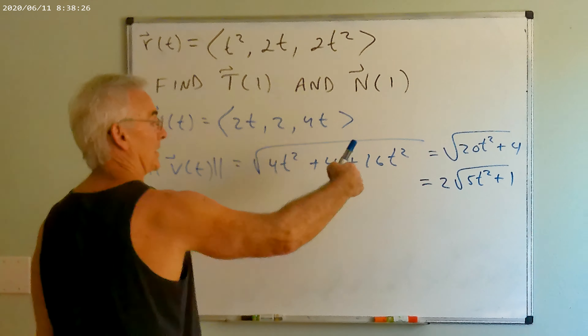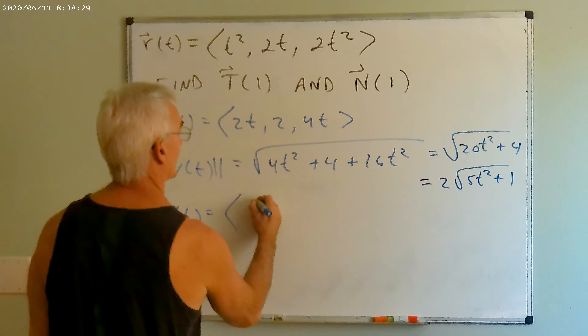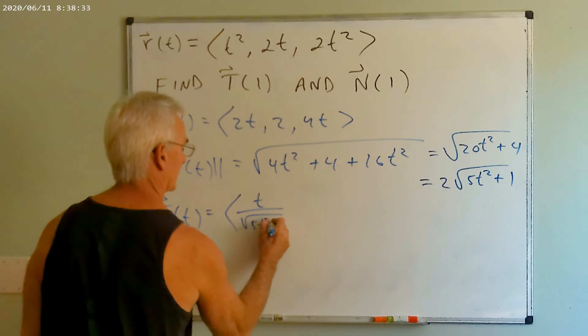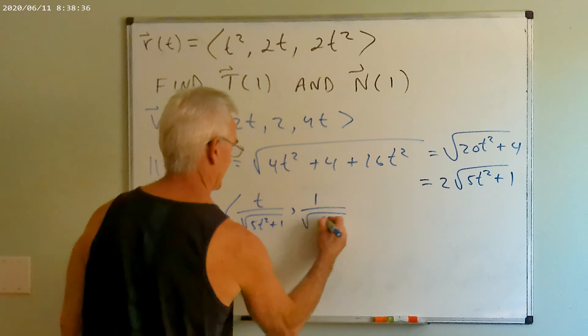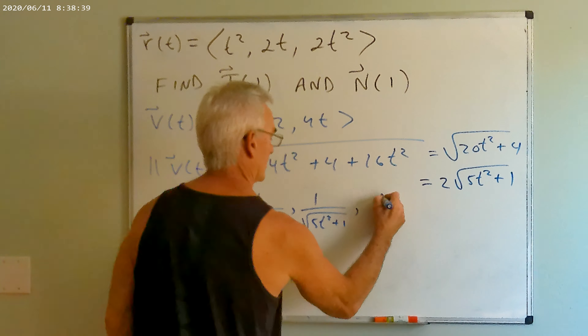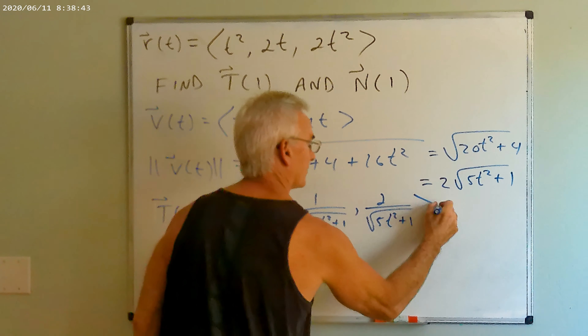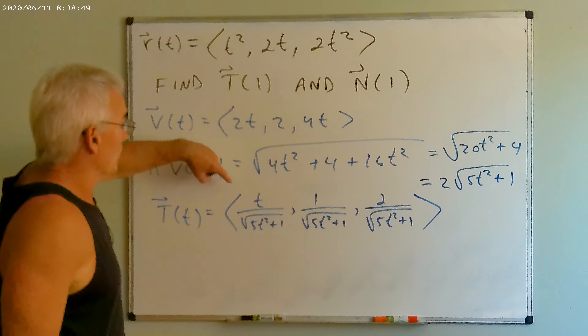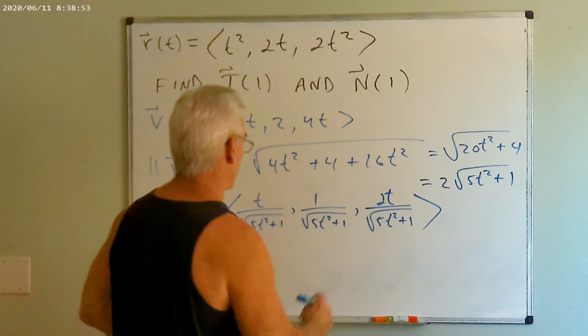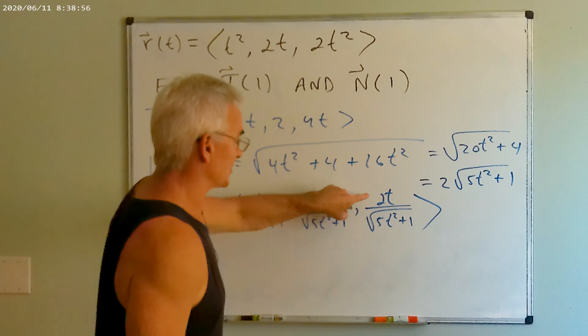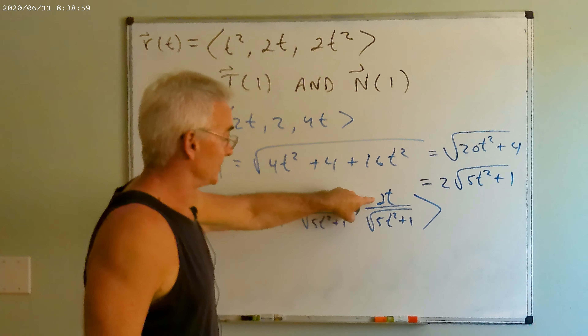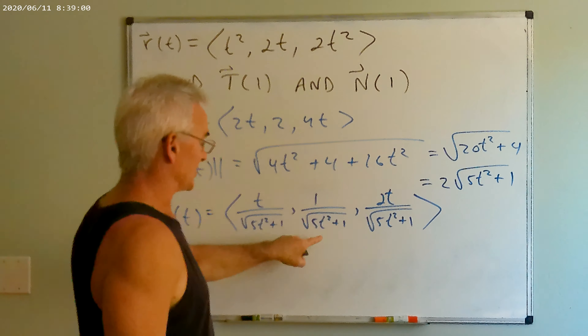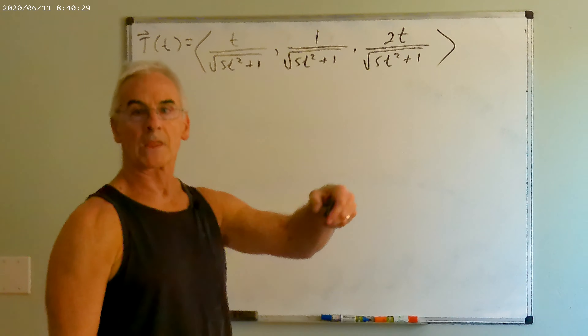Notice that this derivative vector is not a unit vector, so we multiply it by the reciprocal of eight-fifths to get the unit normal vector N(t): negative cos(2t), negative sin(2t), zero. It's easy to see this is a unit vector because the sum of the squares equals one. More importantly, T dotted with N gives positive four-fifths sin·cos minus four-fifths sin·cos plus zero, which equals zero — verifying that T and N are orthogonal as well as being unit vectors.